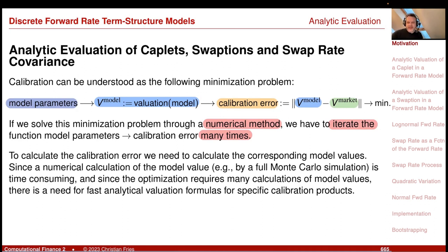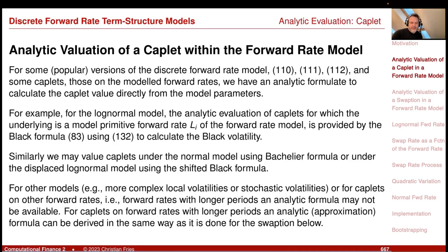This is clearly the motivation for finding an analytic formula that maps model parameters to market-observed values. Since the optimization requires many such calculations, there is a need for a fast analytic formula. We already had this, for example, for the caplet — caplet is easy — for some popular versions of our discrete forward rate model.